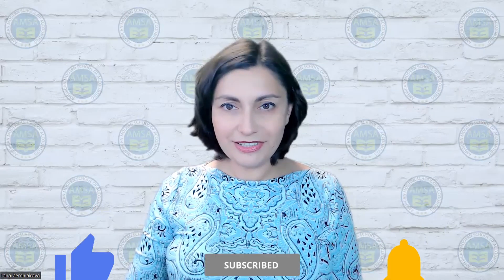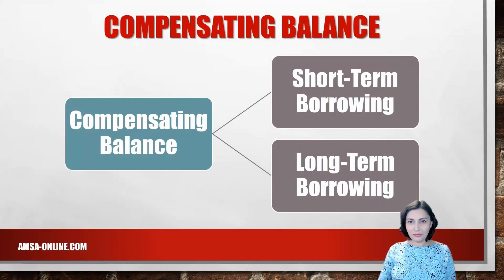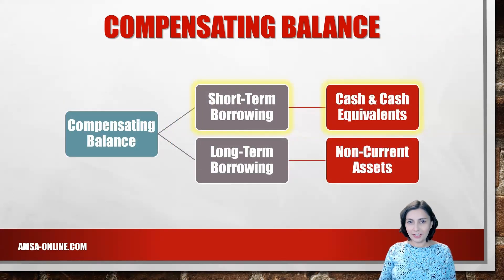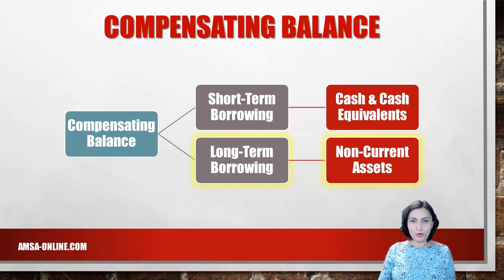A compensating balance is a minimum deposit a borrower must maintain in a bank account. It can be against either short-term or long-term borrowings. If it is against short-term borrowings, a company would report it in current assets as cash and cash equivalents. If it is against long-term borrowings, it would be reported as non-current assets in either the investments or other assets section.